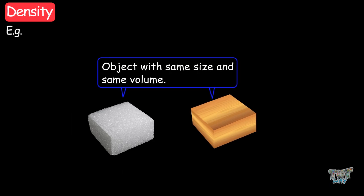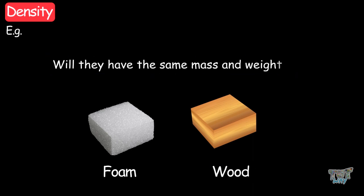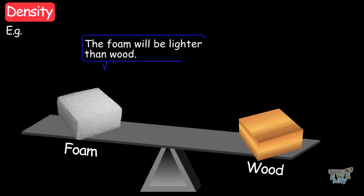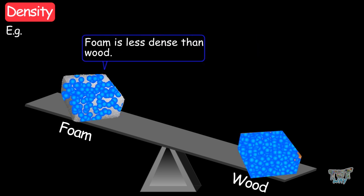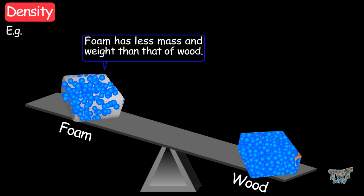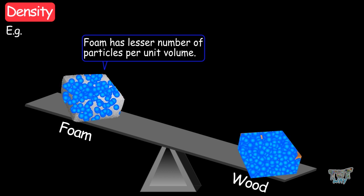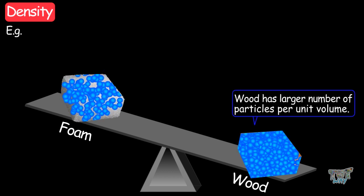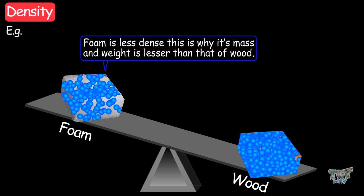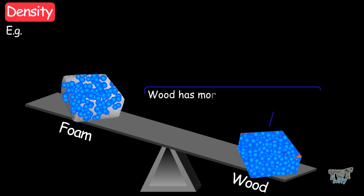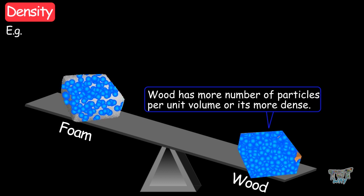Here we have two objects of the same size and same volume: a piece of foam and a piece of wood. Will they have the same mass and weight? No — the foam will be lighter than the wood. Foam has less mass and weight than wood. In other words, foam has a lower number of particles per unit volume, while wood has a larger number of particles per unit volume. So foam is less dense, which is why its mass and weight is lower than that of wood.